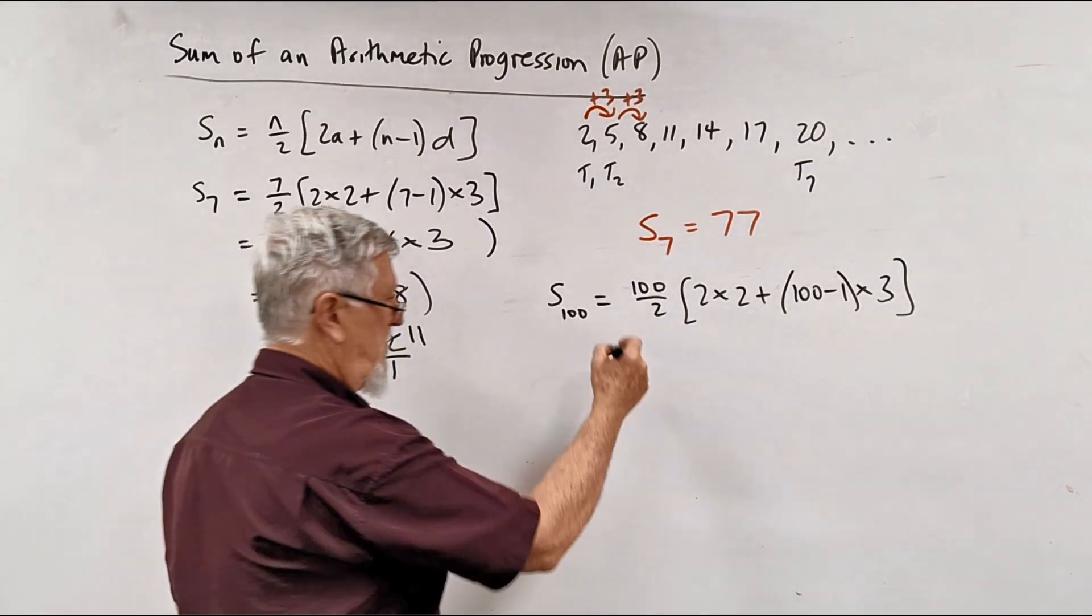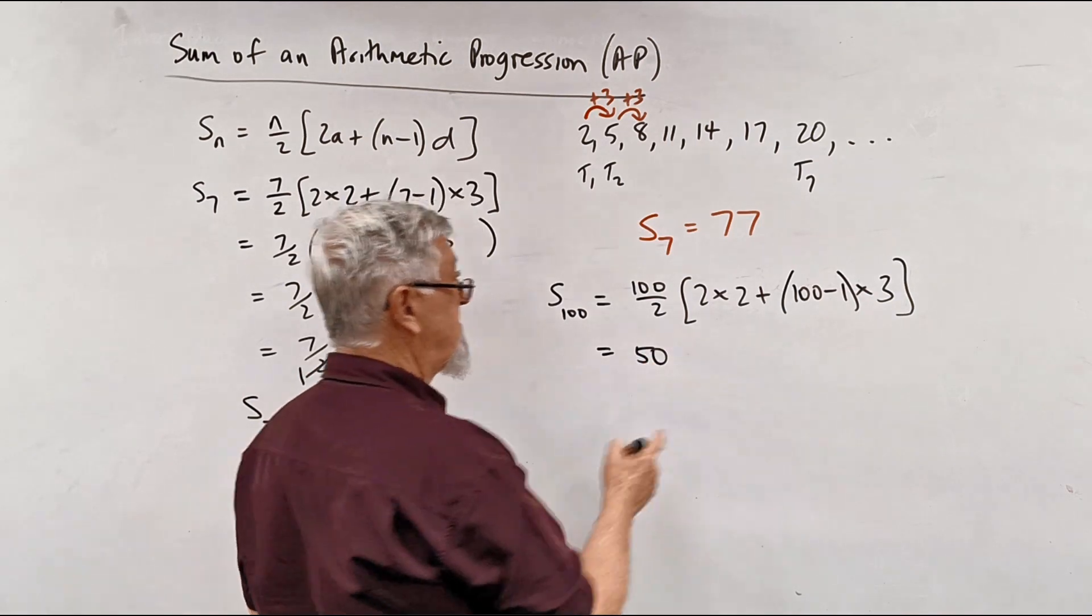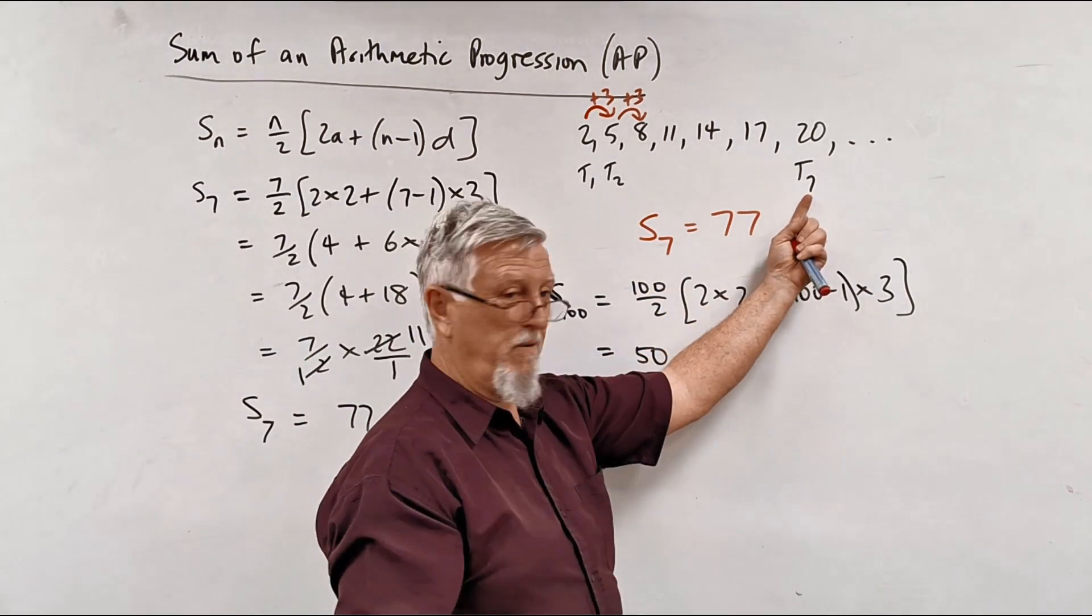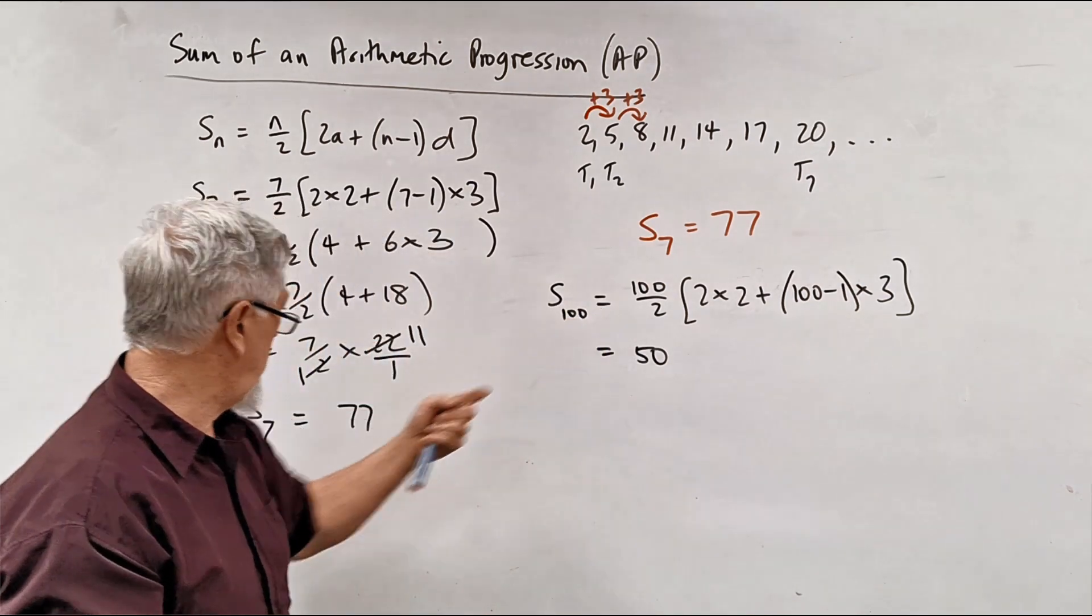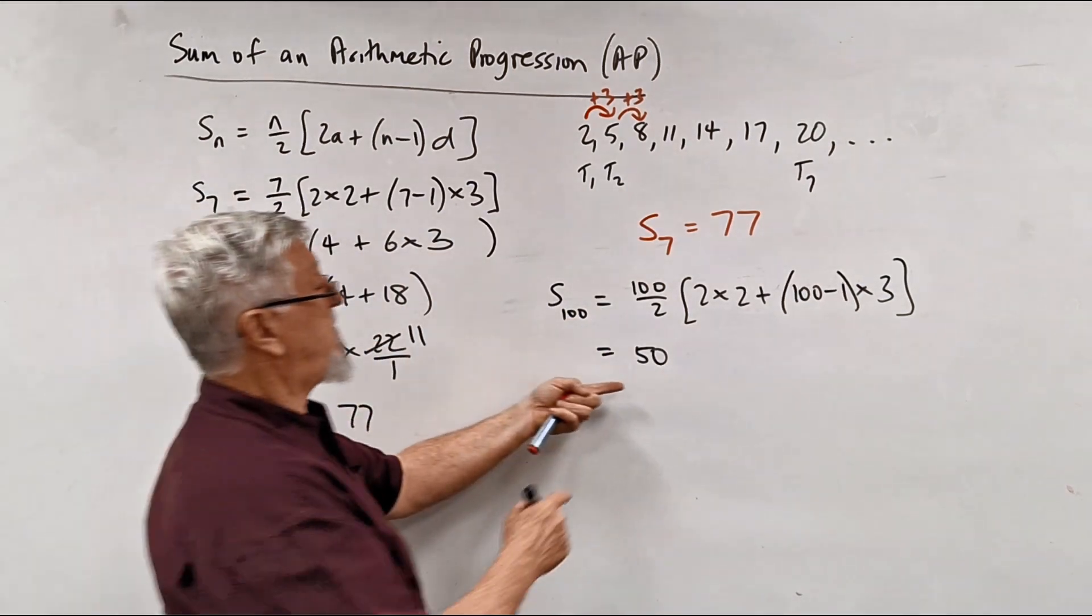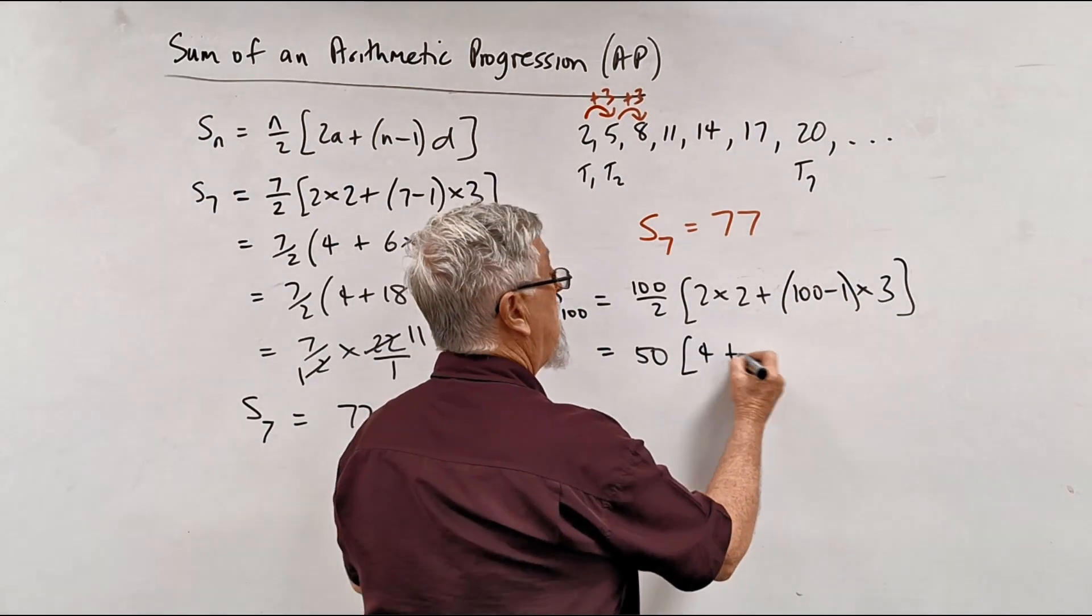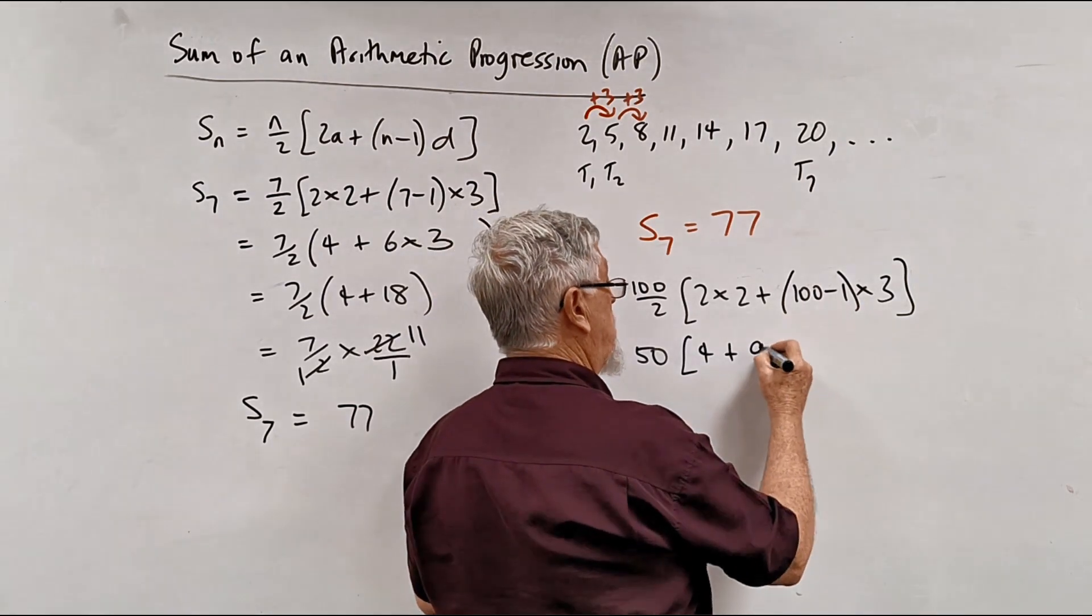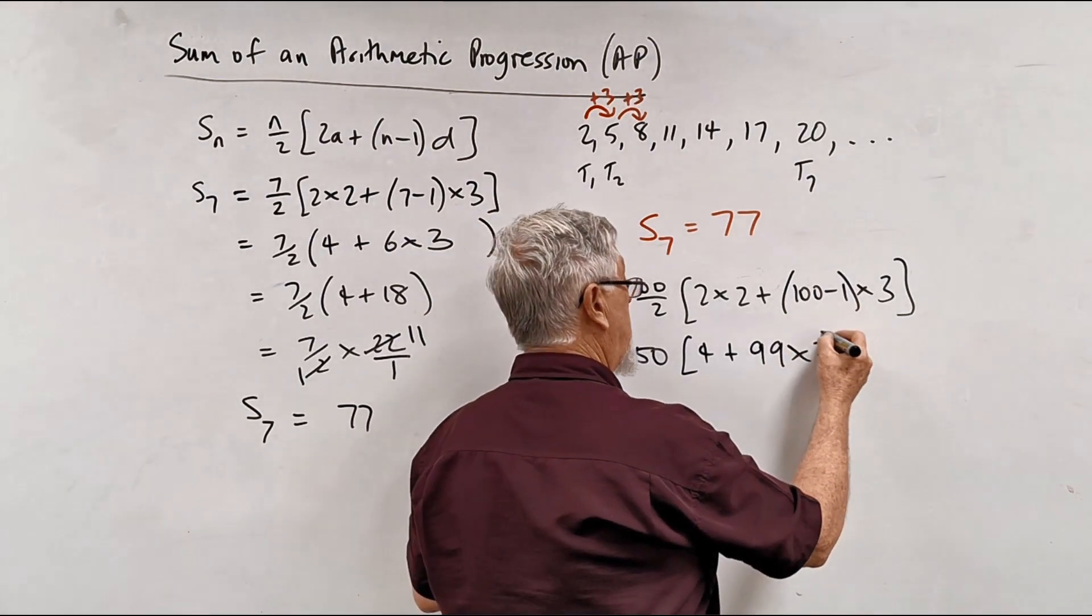So 100 divided by 2 is 50. It is nice, by the way, if they give you an even number of terms, not an odd, so you don't have to deal with the fractions. So 50 outside of 4 plus, 100 take 1 is 99 times 3.